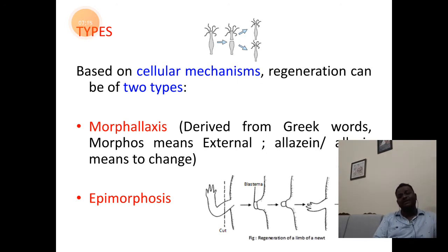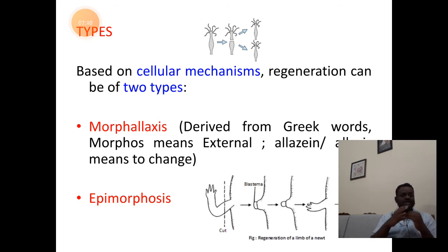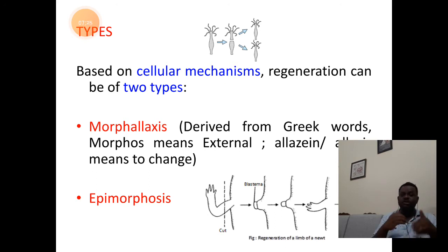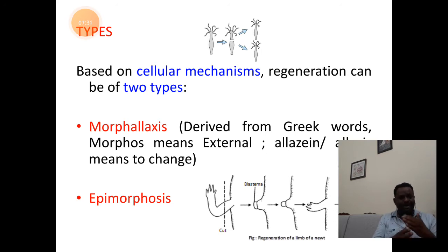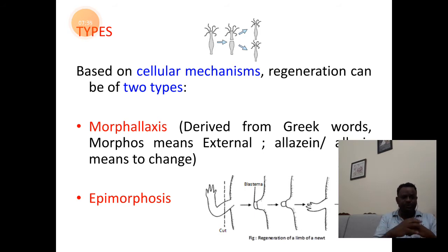Next, after understanding the definition, we look at the types of regeneration. Based on the cellular mechanism, regeneration is of two types. The first one is morphallaxis.